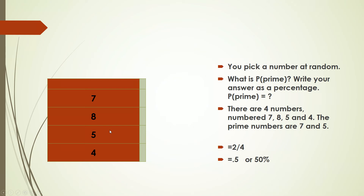There are four numbers: seven, eight, five, and four. The total numbers are four, so we divide by four. The prime numbers among them are seven and five. So there are two prime numbers out of four. Two divided by four equals one half, or 50%.